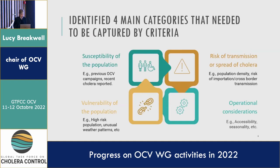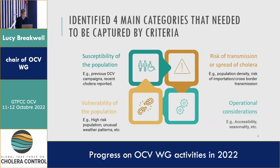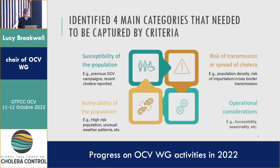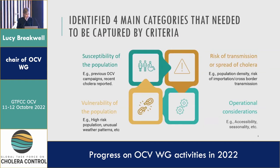Working from the top left: susceptibility of the population, such as whether they'd have previous OCV campaigns or recent cholera reported; moving right, transmission risk — risk of transmission or spread of cholera, such as population density, risk of importation, and cross-border transmission; moving down, operational considerations such as accessibility, seasonality, and security; and lastly, vulnerability of the population — whether they're high risk or subject to unusual weather patterns.